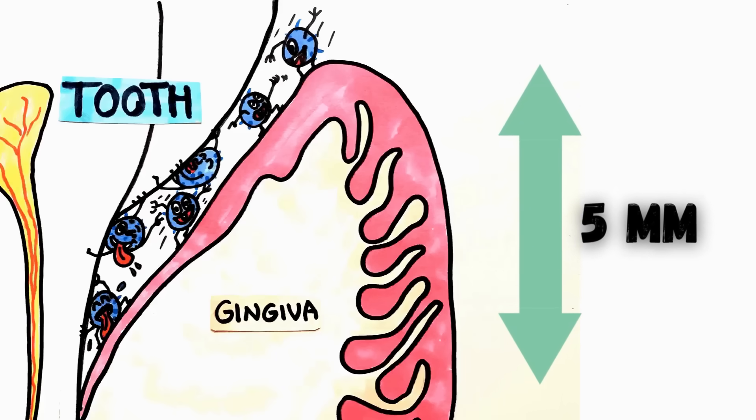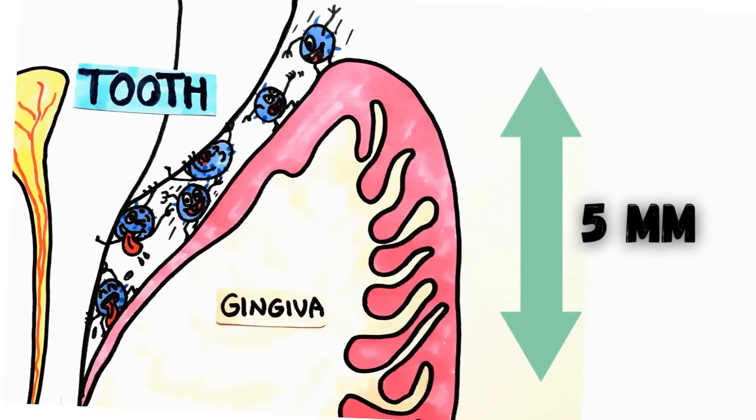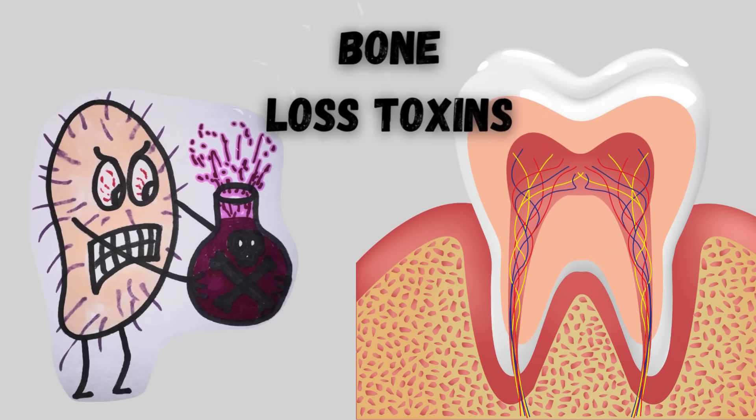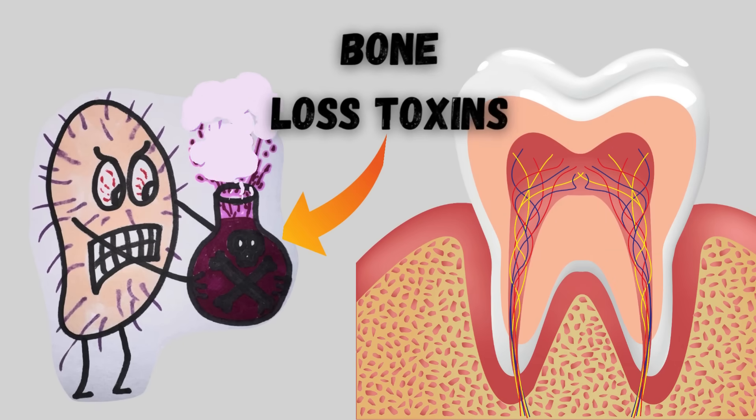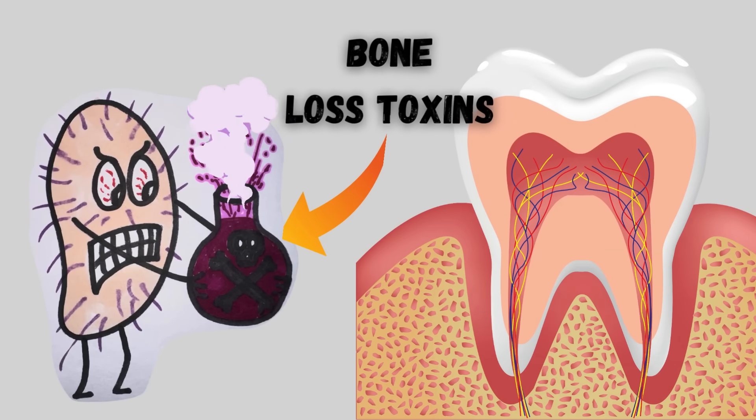This process continues to deepen the gap to around five millimeters in depth. At this stage, a change occurs in the bacterial residents within the gap — only anaerobic bacteria can survive there, and these anaerobic bacteria are far more destructive than their aerobic cousins.